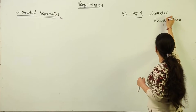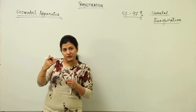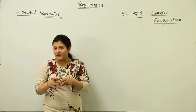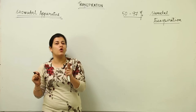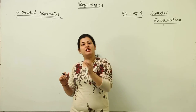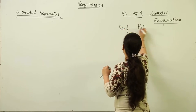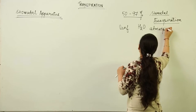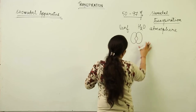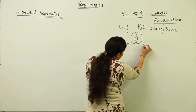Recall from the topic of dicot and monocot leaves, where we discussed that the lower and upper epidermis had certain specialized epidermal cells known as guard cells. The entire stomatal apparatus is responsible for the exchange of gases. In stomatal transpiration, the exchange of water vapors between the leaf and the atmosphere takes place through the stomatal apparatus — two kidney-shaped cells placed close to each other.